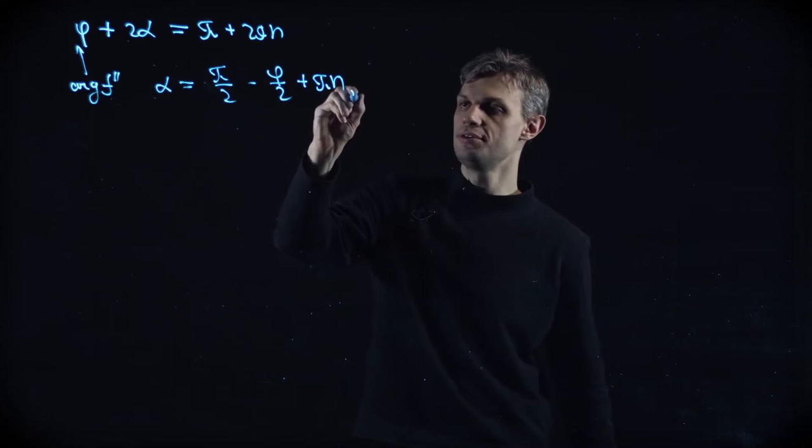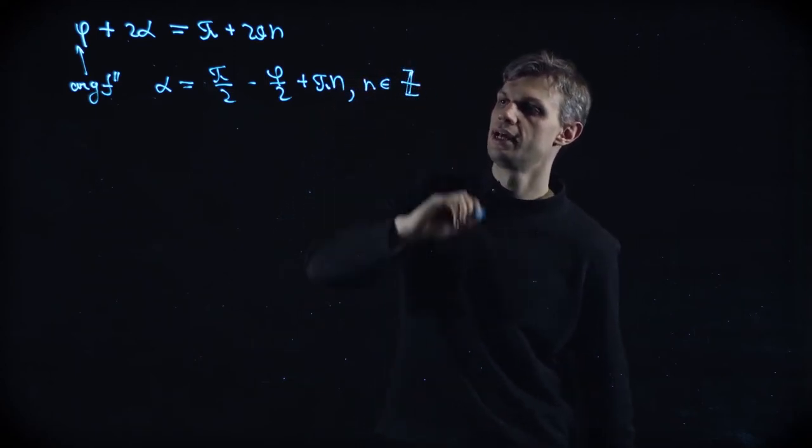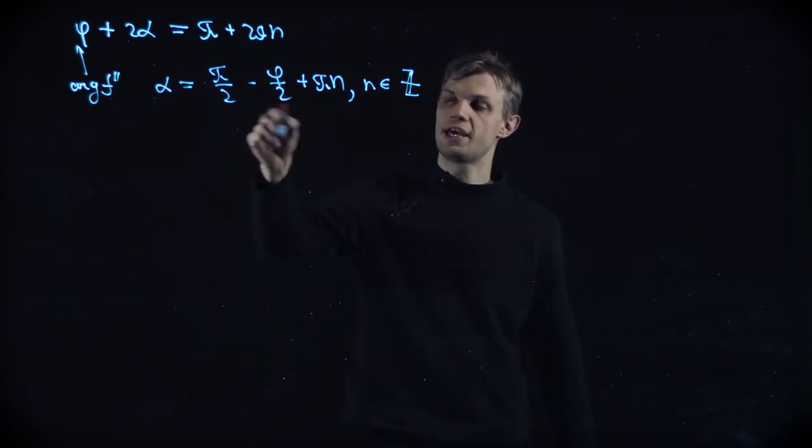All right. So you see in this, there is ambiguity because n is integer. And basically, we have two directions.